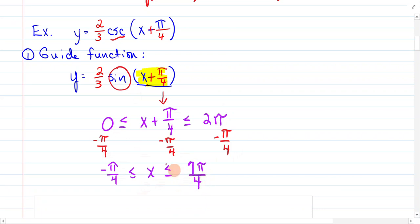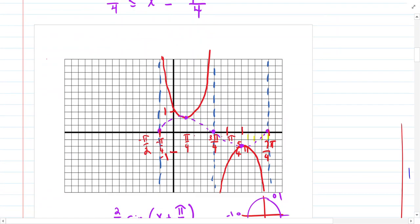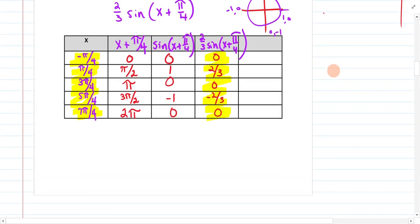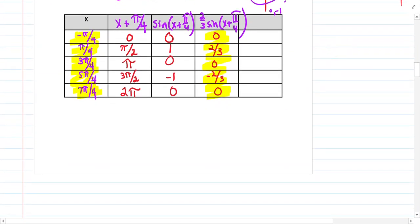So these are our upper and lower boundaries on the chart. Let me go right here to our chart. So negative pi over 4, 7 pi over 4.